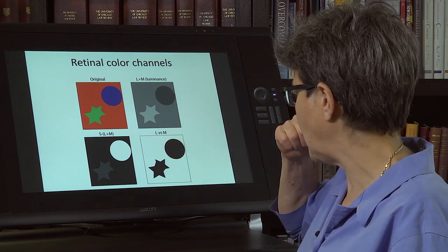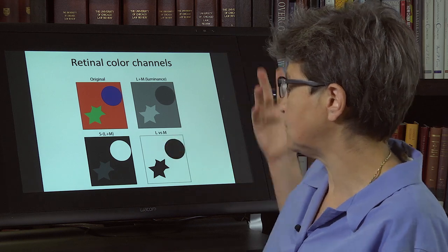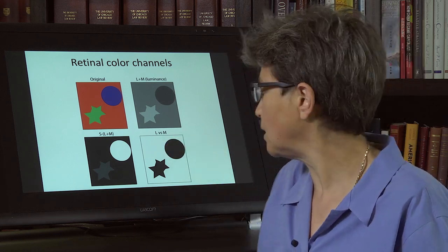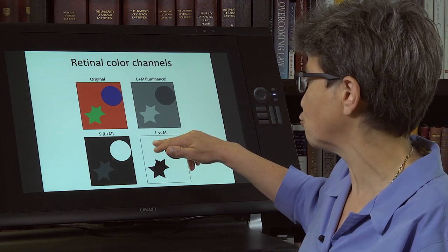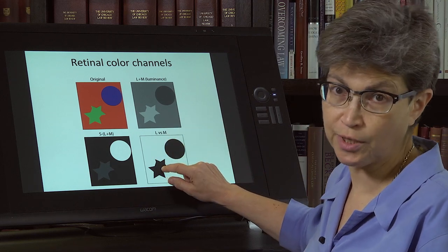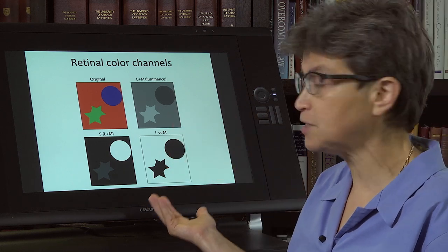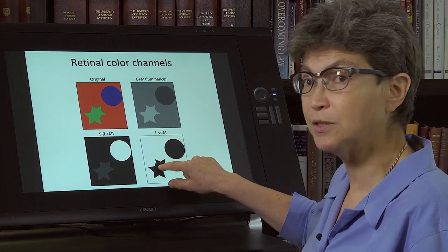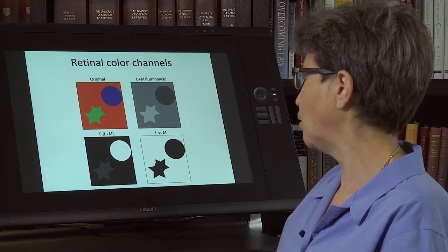And here's the L versus M. And in the L versus M, it's responding in this version. The stylized cell is responding to red and it's not responding to green. It's not responding to blue either. There is a flip version of this where the cell would respond to green, but not to red or blue.